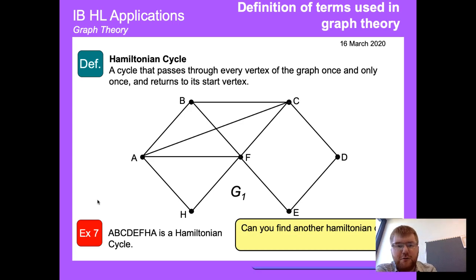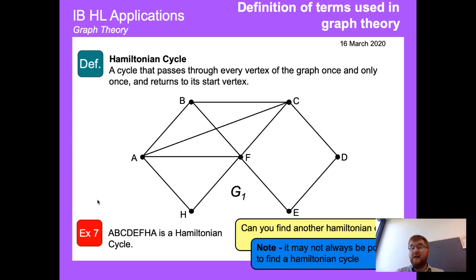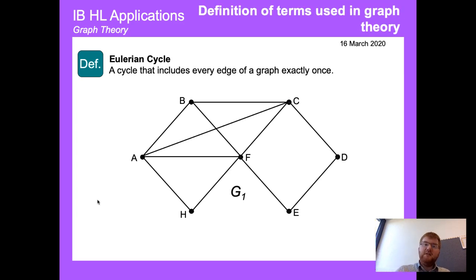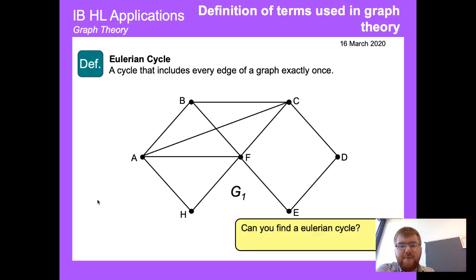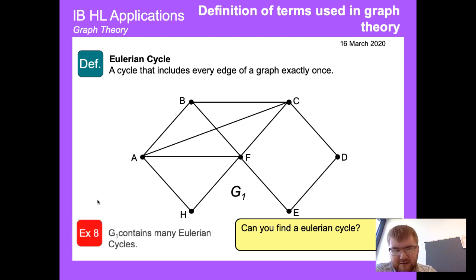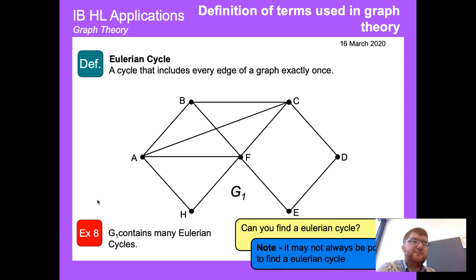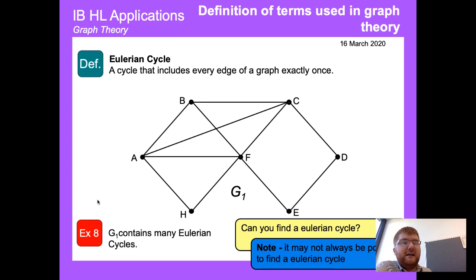Sometimes it's not always possible to find a Hamiltonian cycle, and we'll talk about what features are needed in a later video. A Eulerian cycle is the same kind of idea but with the focus on edges rather than nodes — it's a cycle that includes every edge of a graph exactly once. It's named after the Swiss mathematician Leonhard Euler — 'Euler' meaning 'owl' in German. Not always possible to find a Eulerian cycle either.